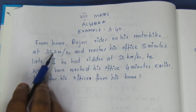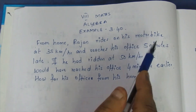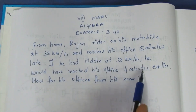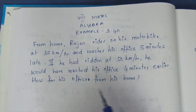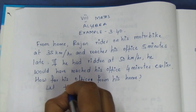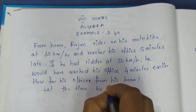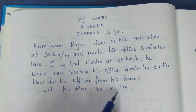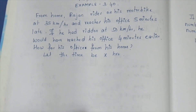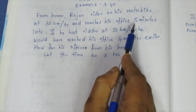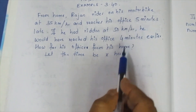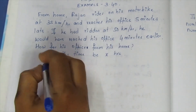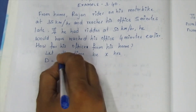Let the time be x. Looking at the distance, we are aware of the time. The distance formula is speed multiplied by time.